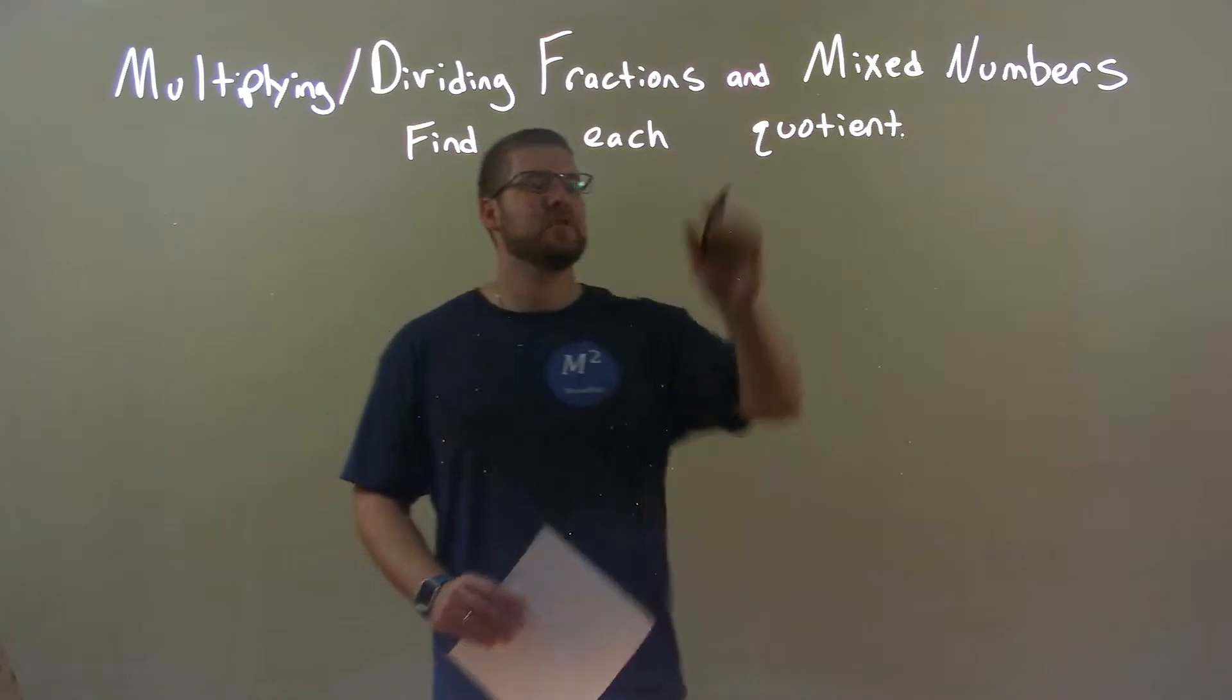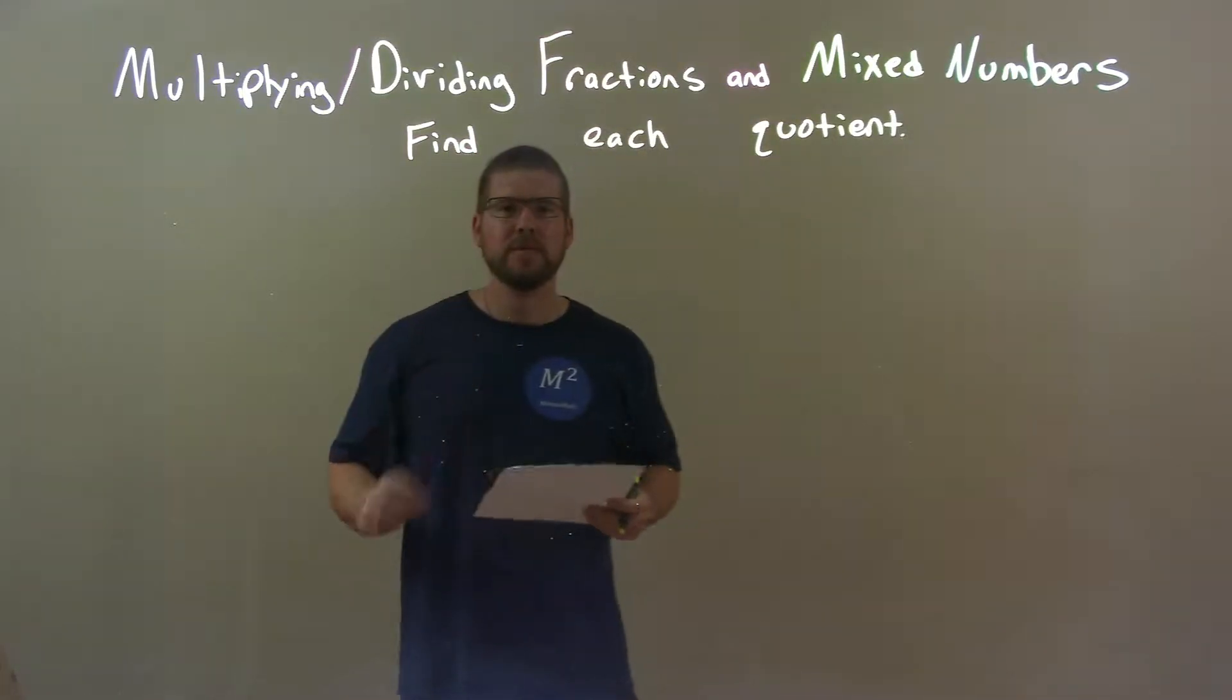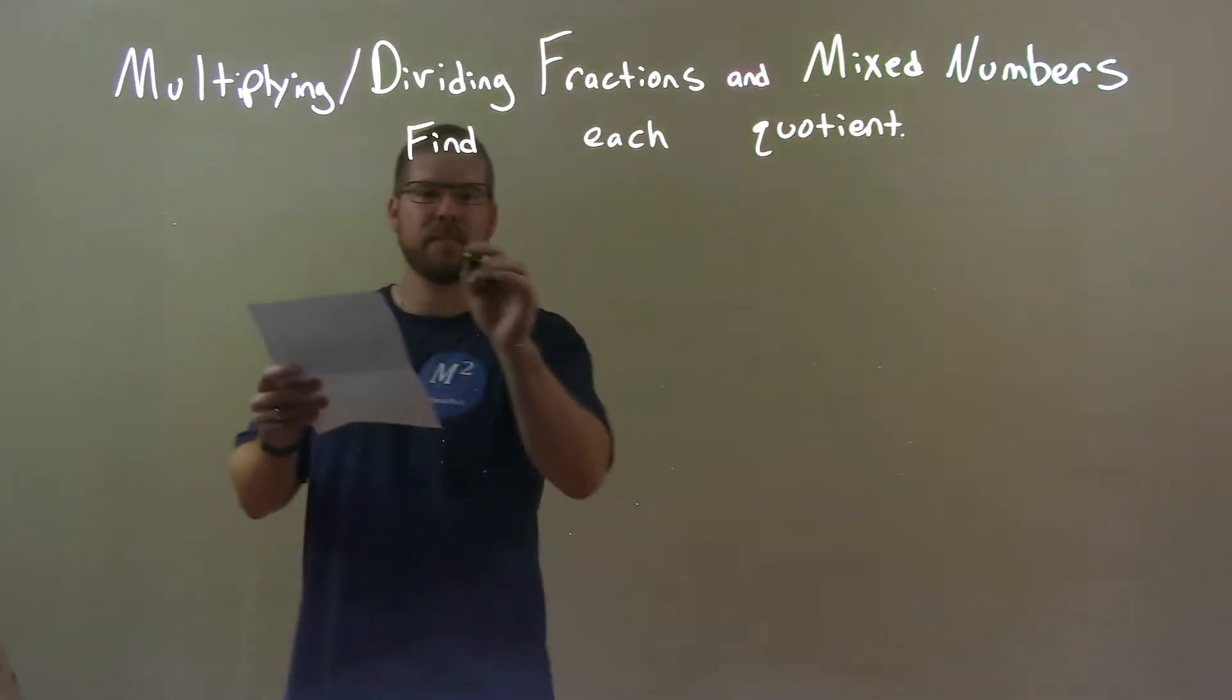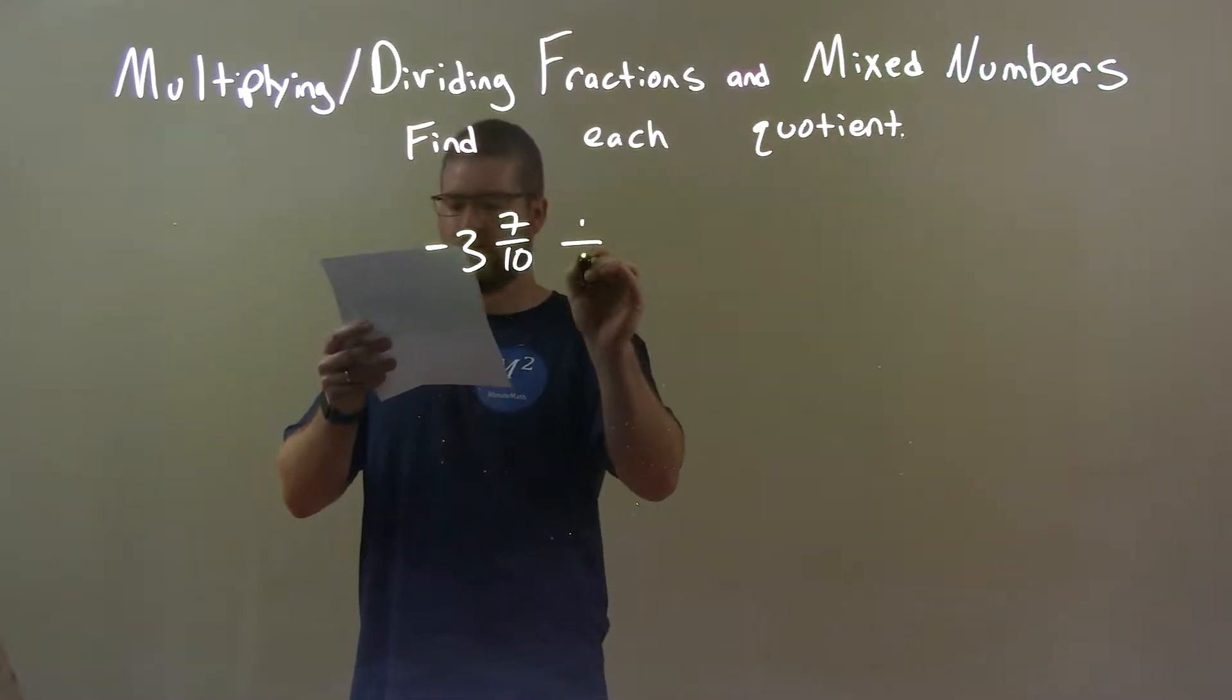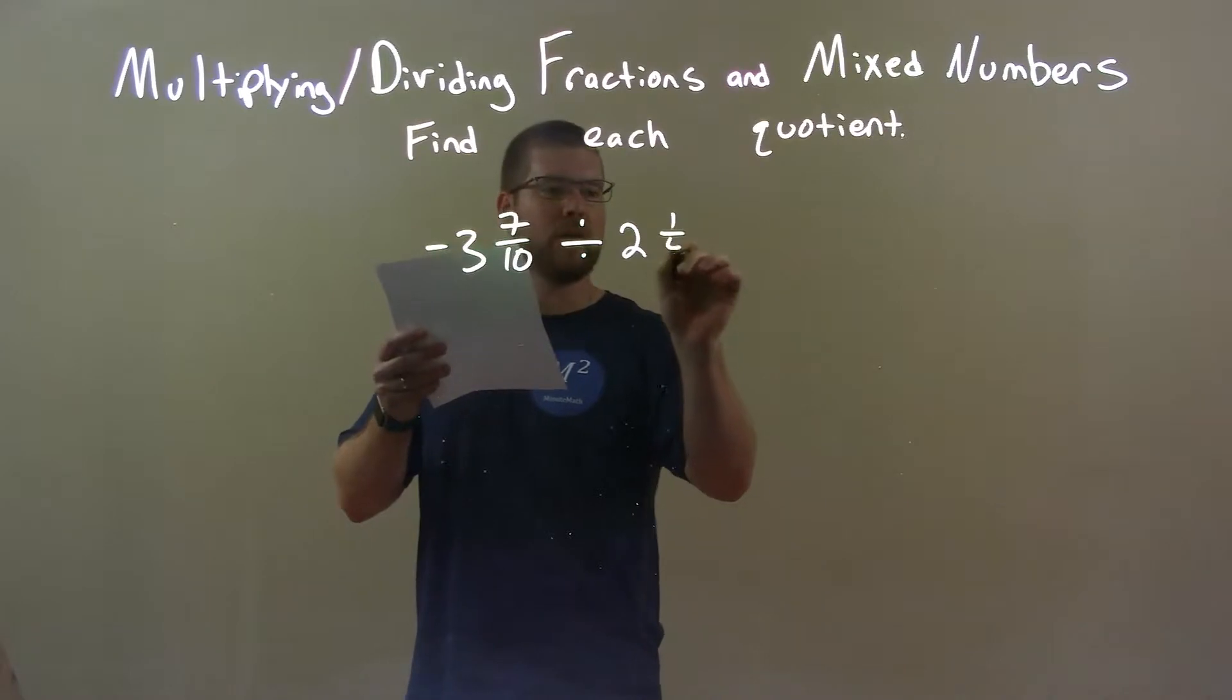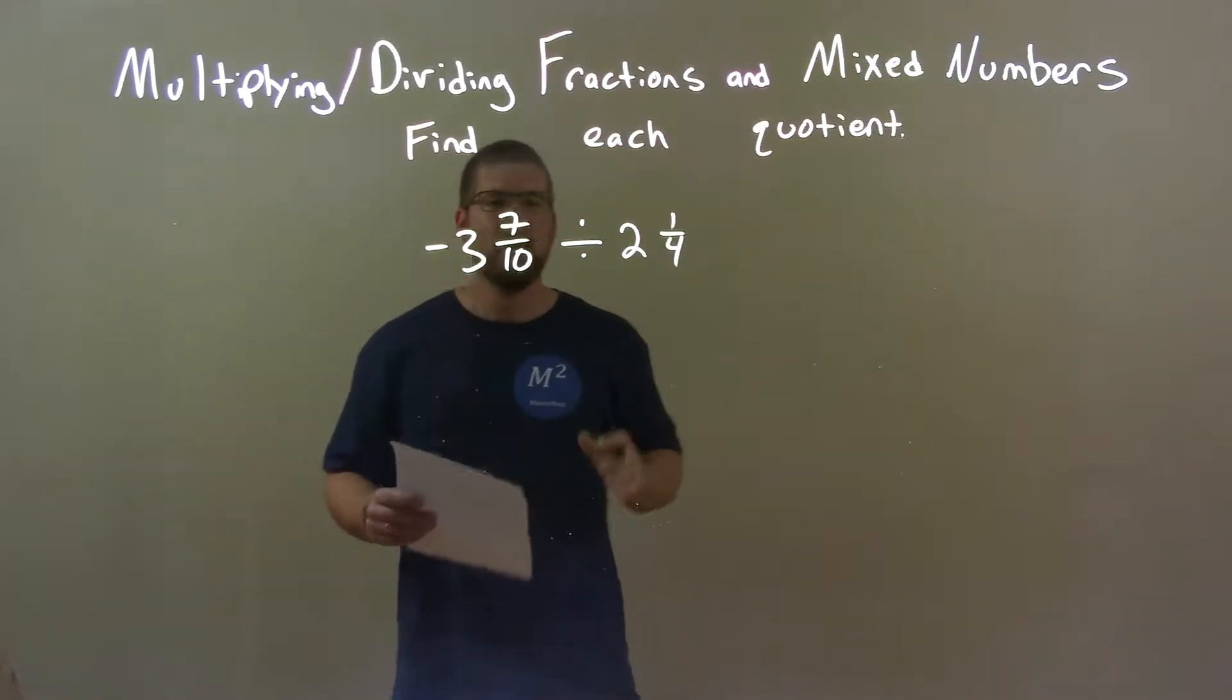We're going to find each quotient. So, if I was given these numbers negative 3 and 7 tenths divided by 2 and 1 fourth. Well, if you're like me, I don't like improper fractions with multiplication and division.